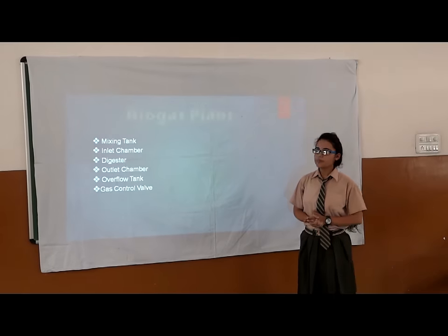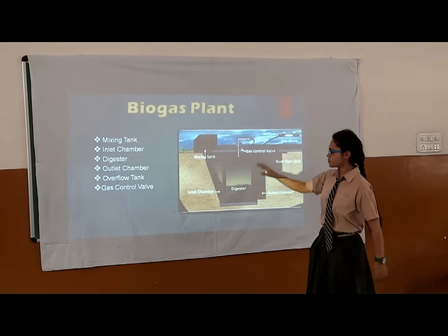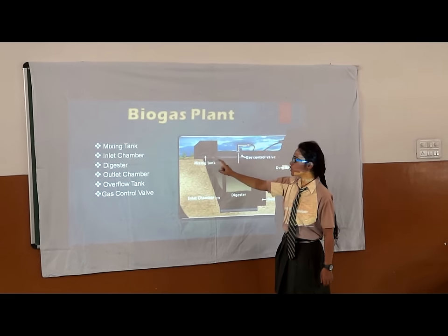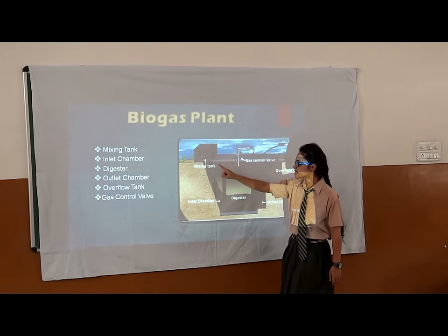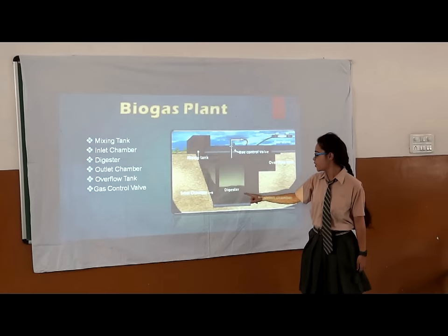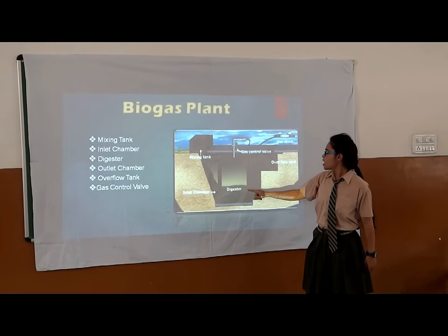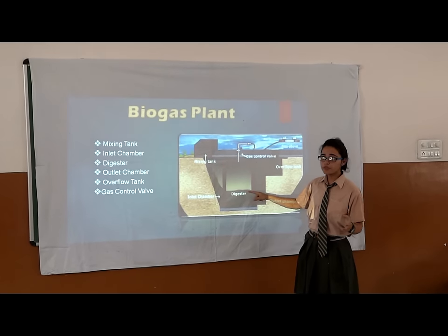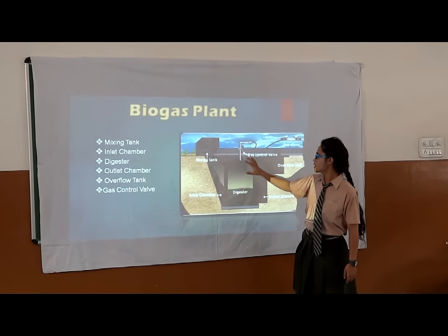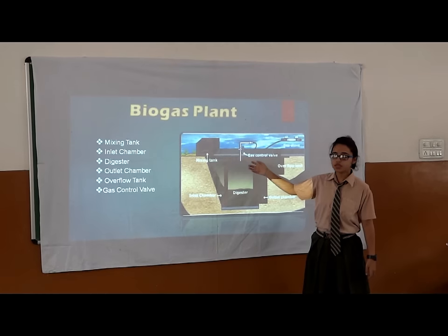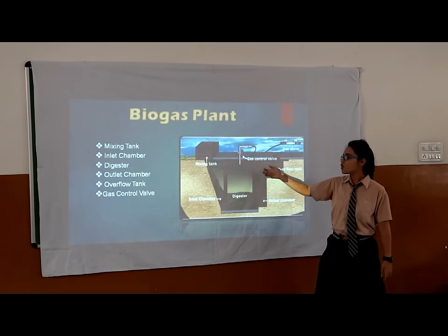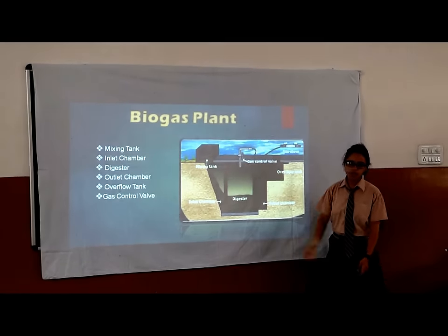Lastly, the biogas plant. In this, the biogas gets mixed up with water in the mixing tank and then it comes into the digester chamber. After the anaerobic fermentation of two months, the gas gets produced, and if we switch on the gas stove, then the gas flame will come.